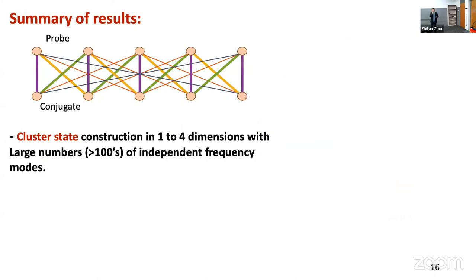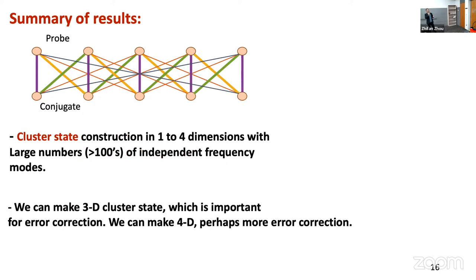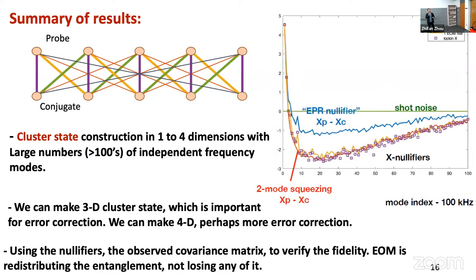To summarize what we got in the experiment: we can generate cluster states from one to four dimensions with a reasonably large number of independent frequency modes. We made a three-dimensional cluster state, which is important for error correction, and we can also make a four-dimensional cluster state, which perhaps offers more error correction capability. We used nullifiers and the covariance matrix to verify the fidelity, confirming that the EOM is a really good tool for quantum optical manipulation.